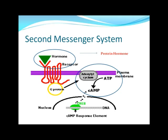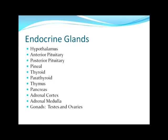So again, protein hormones, because of their chemical composition being hydrophilic, cannot get through the plasma membrane. Their protein receptors are located on the outside of the cell; they activate a second messenger that carries out the will of the protein hormone inside the cell. Now here's a list of our various endocrine glands — I'm going to go through each of these glands, the major hormones they produce, and their functions.